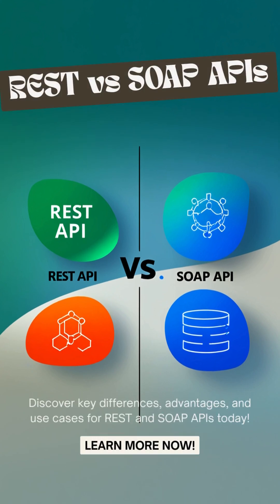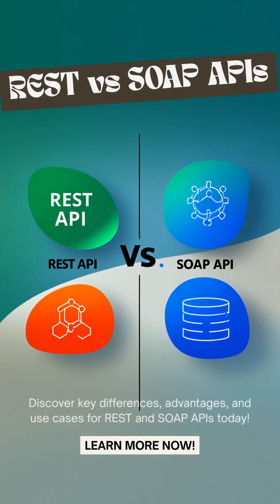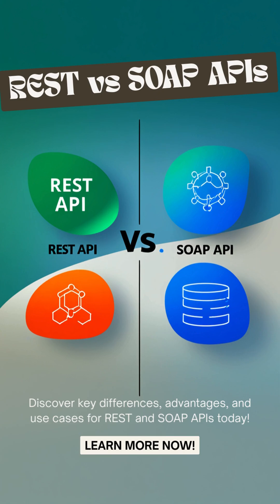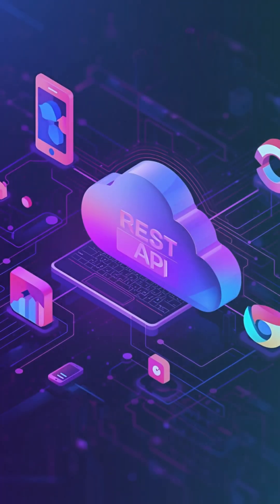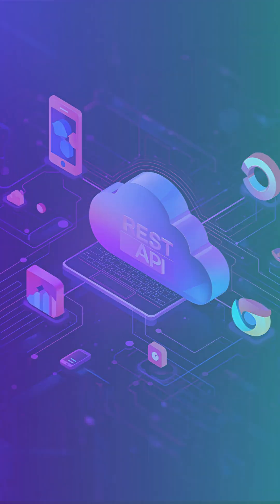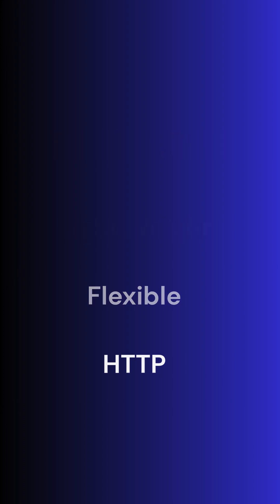Ever wondered how apps talk to each other? It's all about APIs. Today, we're breaking down REST versus SOAP. First up, REST API — think of it as a lightweight, flexible messenger. It uses standard web protocols like HTTP. It's like ordering food online: quick, easy, and you get exactly what you ask for.